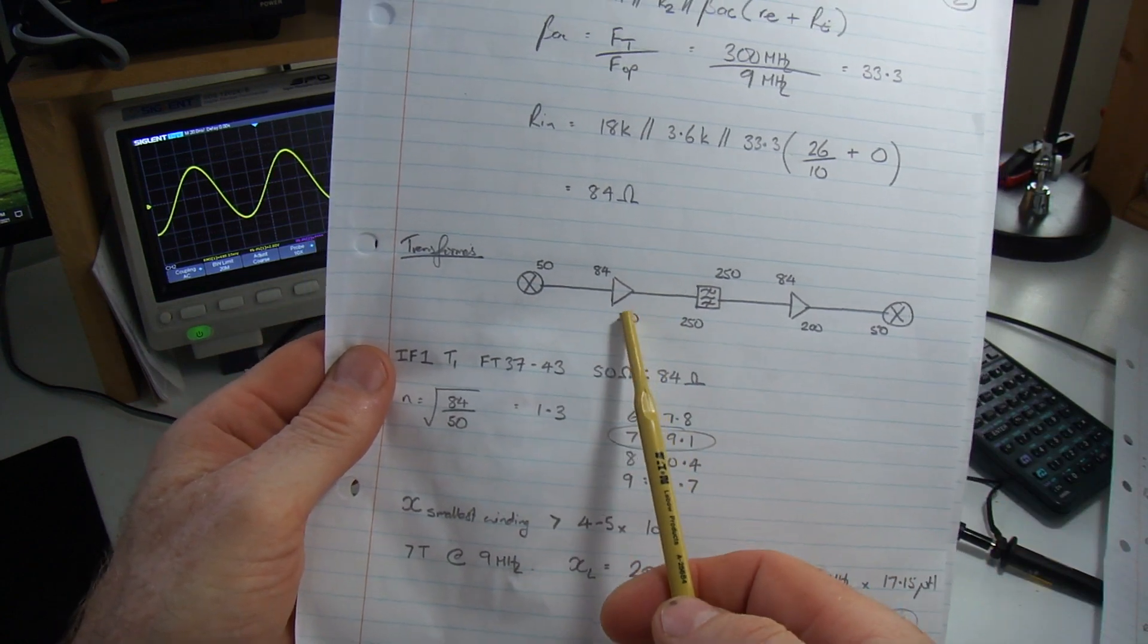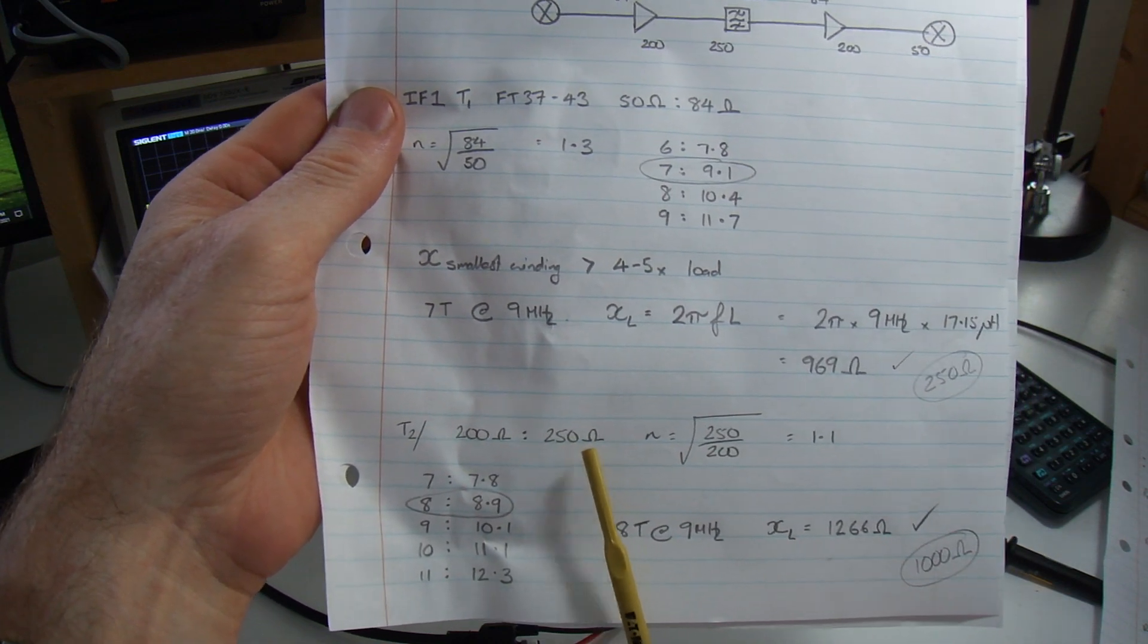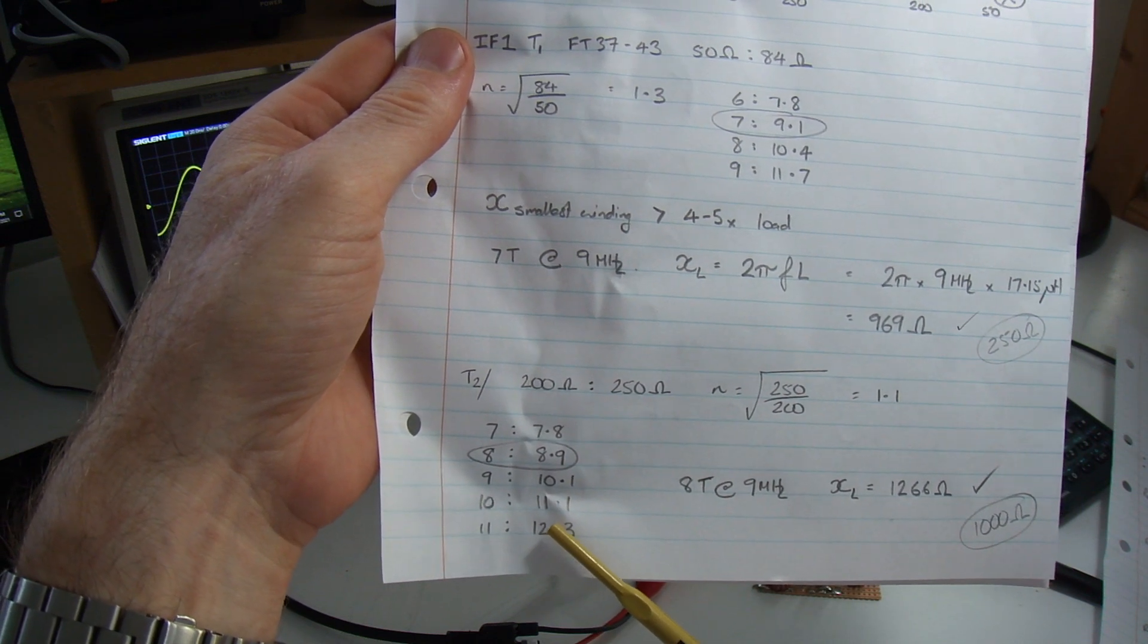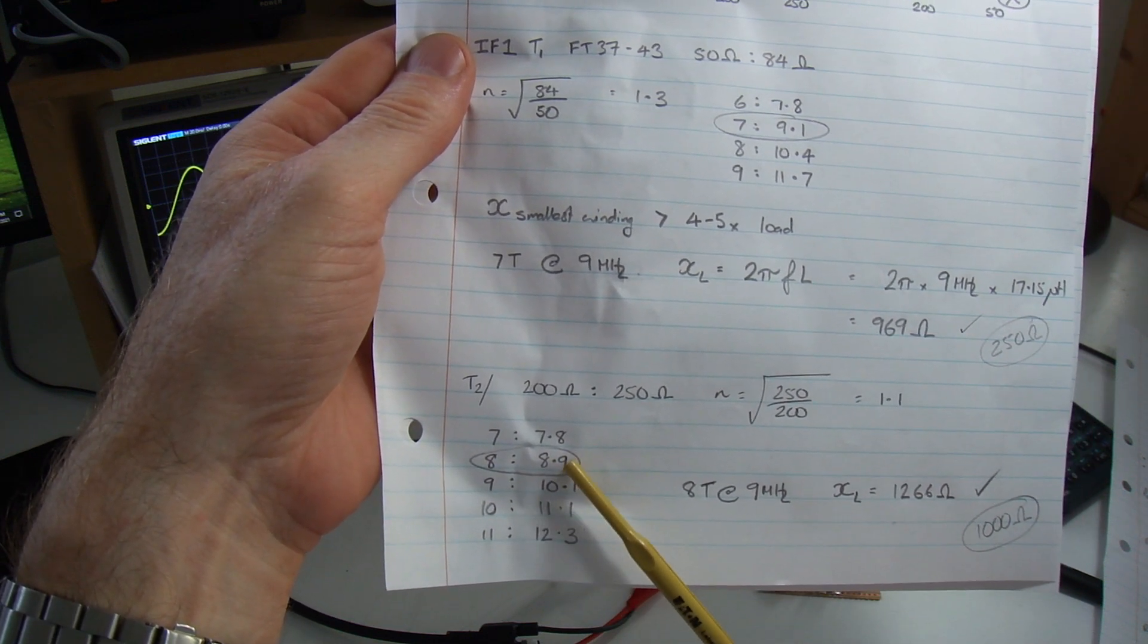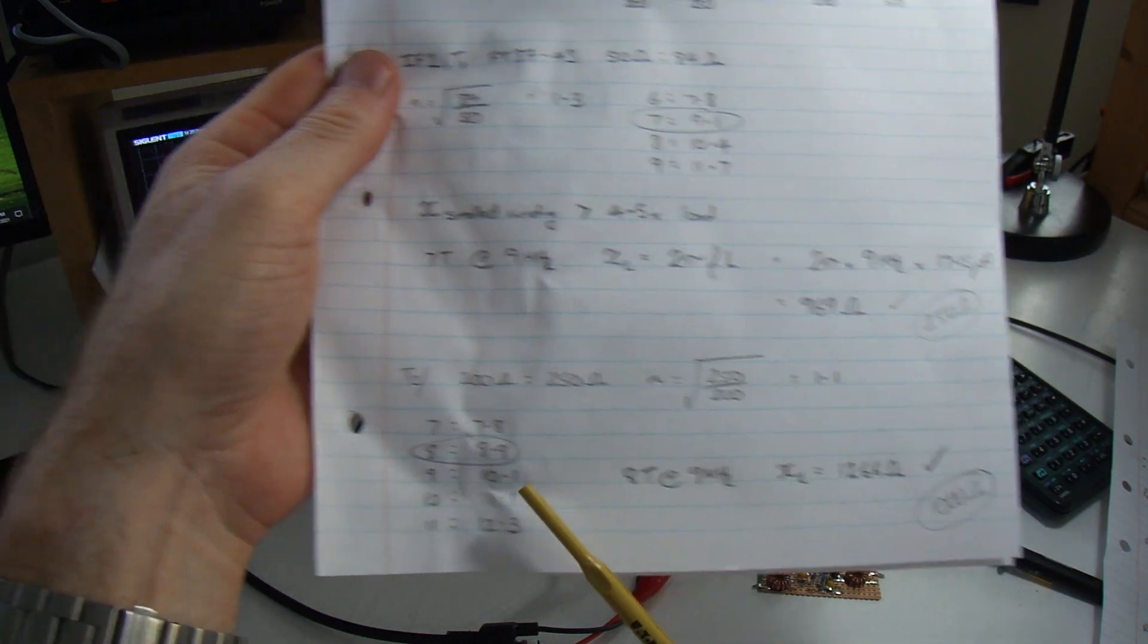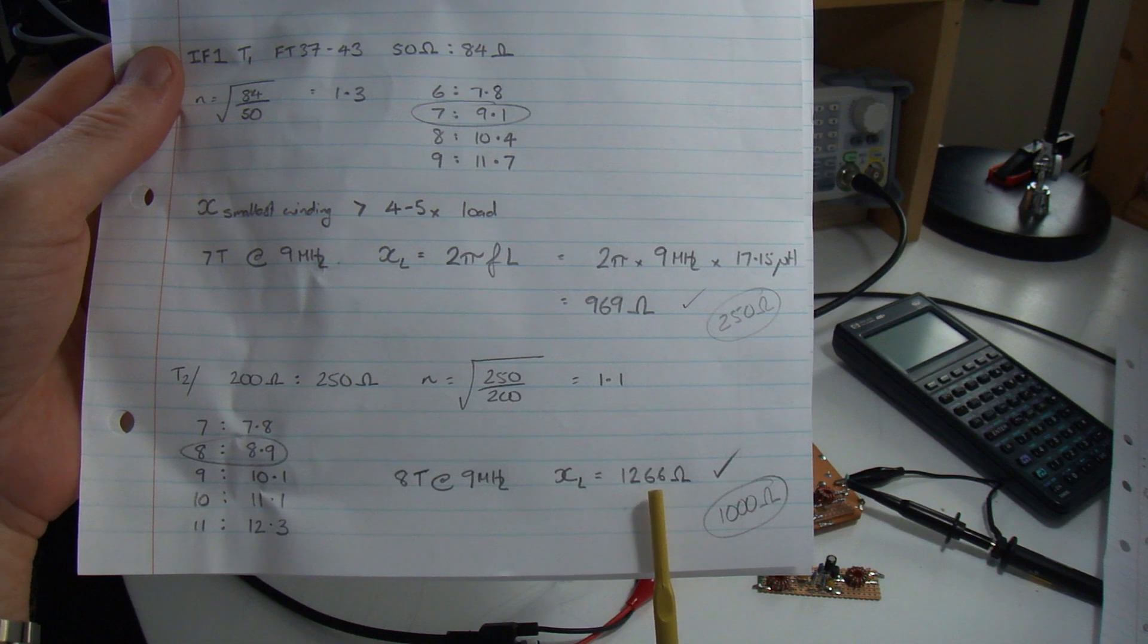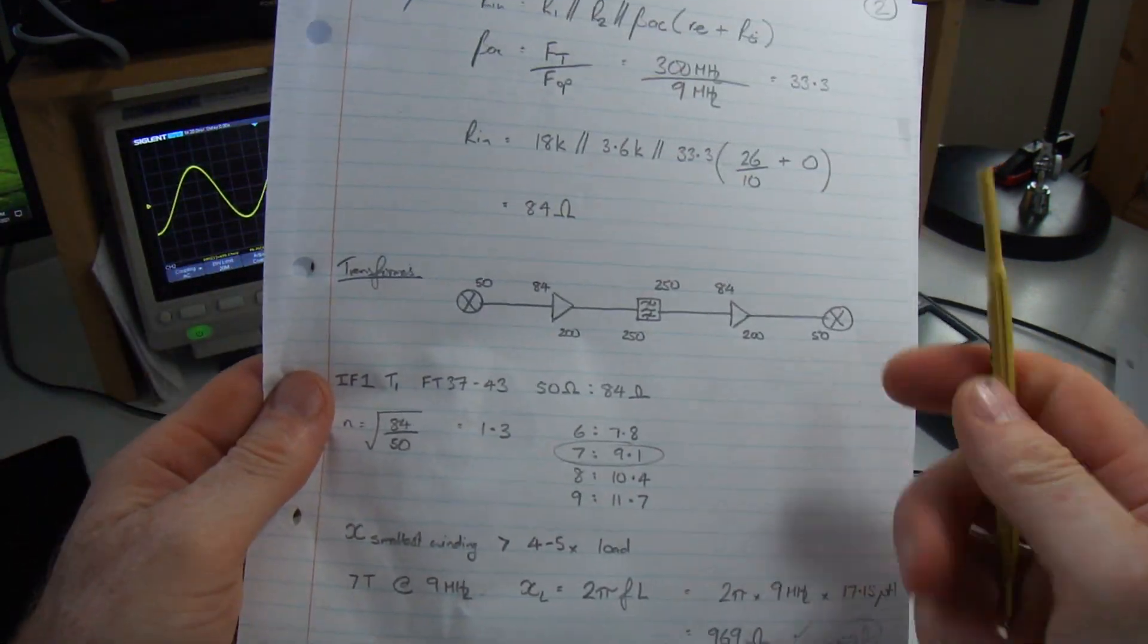T2 here, matching that 200 ohms on the output through to 250. Comes out an N of 1.1. Same approach, 7, 8, 9, 10. I'm going to go with 8 turns and I'm going to round that up to 9 turns. 8 turns at 9 megahertz comes out at 1266 for an FT37-43. I needed to be greater than 1000 ohms. Tick, so that's good.